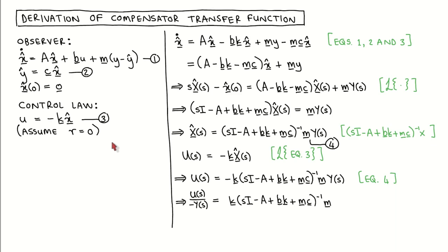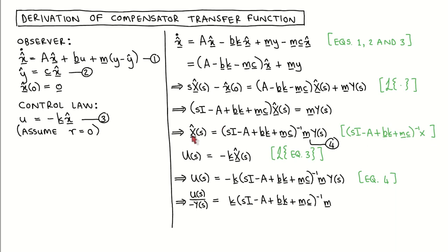We start the derivation by combining equations 1, 2 and 3 to write x̂̇ in terms of x̂ and y. We gather the terms with x̂ and then apply the Laplace transform, which produces this line. We now gather the terms with x̂(s) on the left-hand side and the terms with Y(s) on the right-hand side. Next, we left-multiply with the inverse of sI minus A plus BK plus MC to get only x̂(s) on the left-hand side. We call this result equation 4.